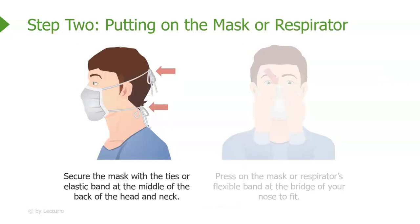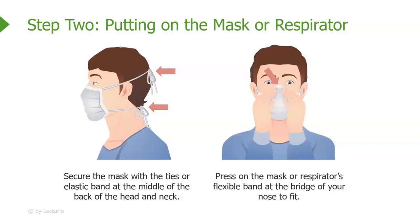Step two: put on your mask or respirator. Make sure you secure the mask with ties or the elastic band at the middle of the back of your head and the neck. Press on the mask or respirator's flexible band at the bridge of your nose — that will help it fit more closely and securely to your face. It's very important that the respirator fits very securely.